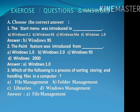Question number A. Choose the correct answer. Question number 1: The start menu was introduced in — . The options are: A. Windows 3.1, B. Windows 95, C. Windows Me, D. Windows 1.0. The correct answer is Windows 95.